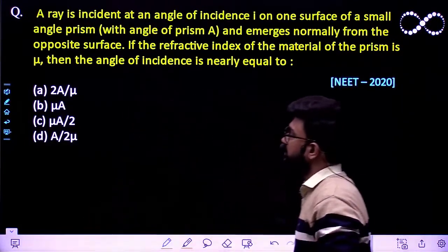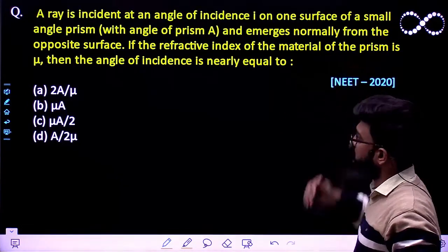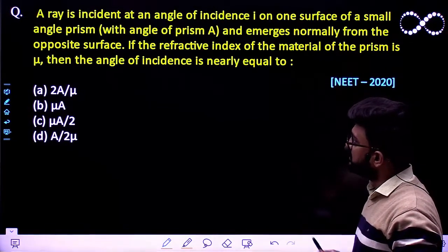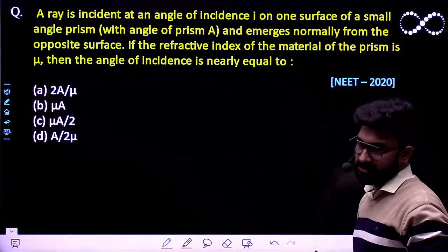Question says a ray is incident at an angle of incidence I on one surface of a small angle prism with angle of prism A and emerges normally from the opposite surface.